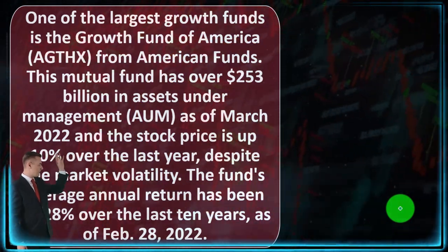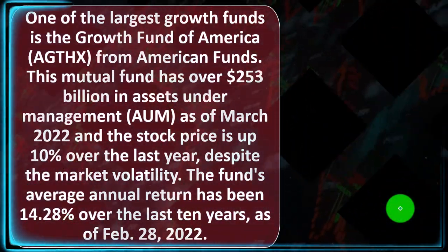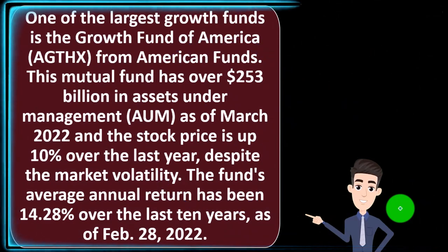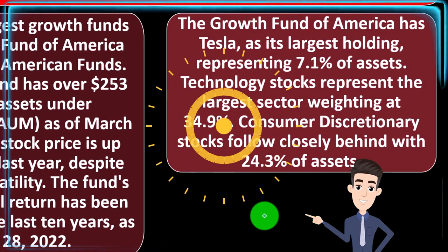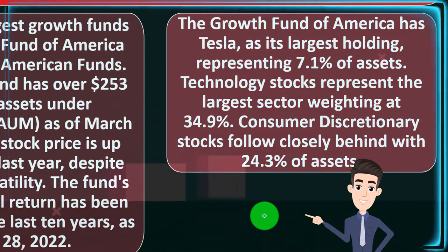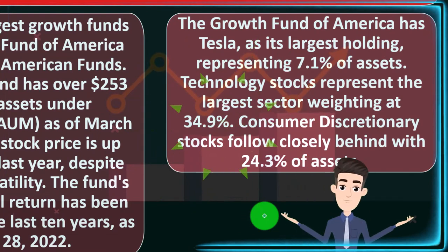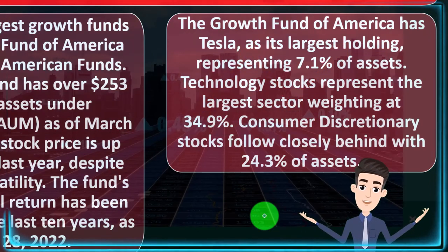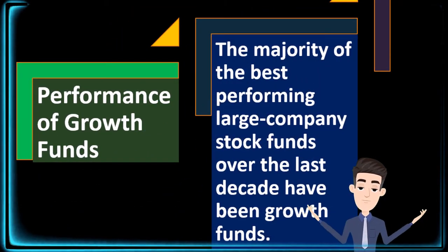The stock price is up 10 percent over the last year despite market volatility. The fund's average annual return has been 14.28 percent over the last 10 years as of February 28, 2022. The Growth Fund of America has Tesla as its largest holding at 7.1 percent of assets. Technology stocks represent the largest sector weighting at 34.9 percent, with consumer discretionary stocks following closely at 24.3 percent of assets.